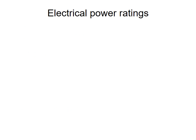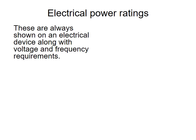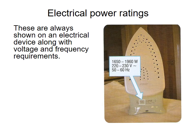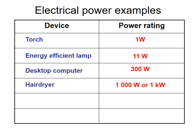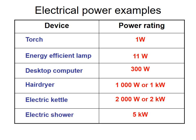Electrical power ratings are always shown on a device along with voltage and frequency requirements. For example, an iron has a power rating between 1650 and 1960 watts, runs at 220–230 volts, and 50–60 hertz. Some examples of power ratings: a torch is 1 watt, an energy-efficient lamp is 11 watts, a desktop computer is 300 watts, a hair dryer is about 1000 watts, a kettle is 2000 watts, and an electric shower is about 5 kilowatts.